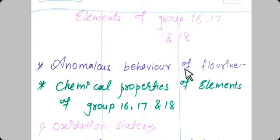This is known as the anomalous behavior of fluorine. Some anomalous properties of fluorine include ionization enthalpy, electronegativity, and electrode potential — all of which are higher for fluorine than for other halogens.